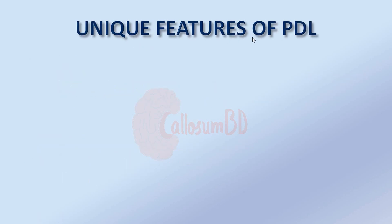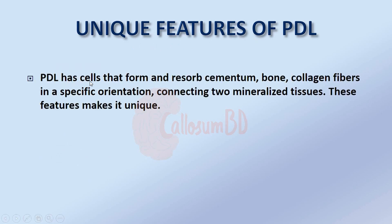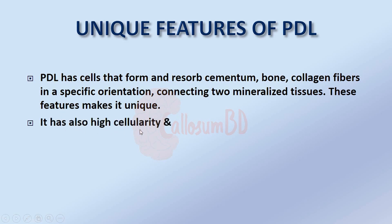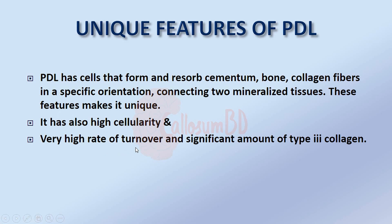Some unique features of the periodontal ligament: it has cells that form and resorb cementum, bone, and collagen fibers in a specific orientation, connecting two mineralized tissues. These features make it unique. It also has high cellularity, a very high rate of turnover, and a significant amount of type 3 collagen.